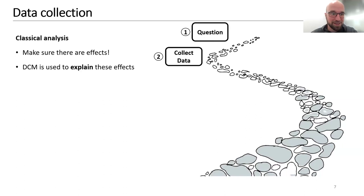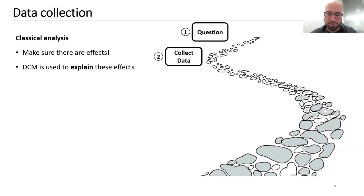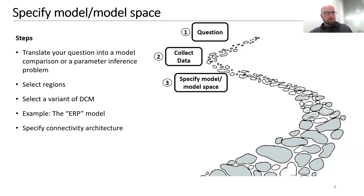You still have to do a classical analysis first. I definitely recommend making sure there are effects, because if there are no effects but your model still shows significant group differences in parameters, it's not clear whether those are truly there. If there is literally nothing in the data, parameter differences are more likely to be artifacts of model inversion. DCM should be thought of not as a statistical test but as a tool to explain effects that are already there.